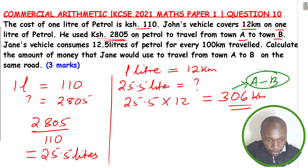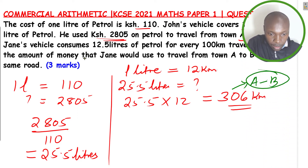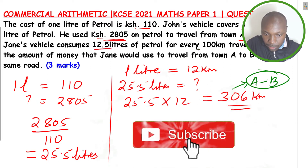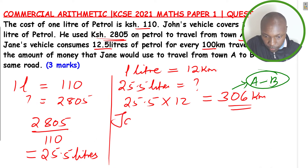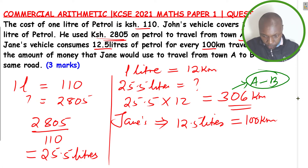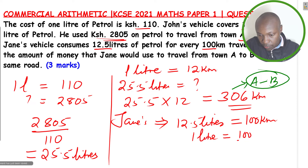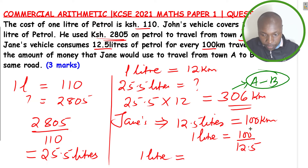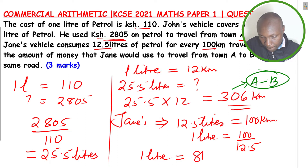25.5 multiplied by 12 gives 306 kilometers. So the distance from A to B is 306 kilometers. Now for Jane's vehicle: it consumes 12.5 liters of petrol for every 100 kilometers. If 12.5 liters covers 100 kilometers, then 1 liter covers 100 divided by 12.5, which equals 8 kilometers.